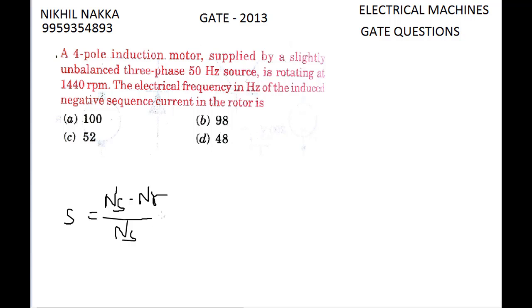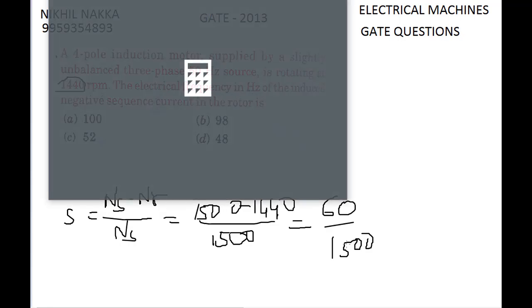NS is the synchronous speed, NR is the rotor speed which is the given speed. So 1500 minus 1440 by 1500, which gives us 60 by 1500.